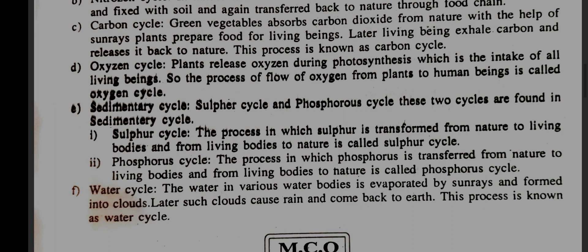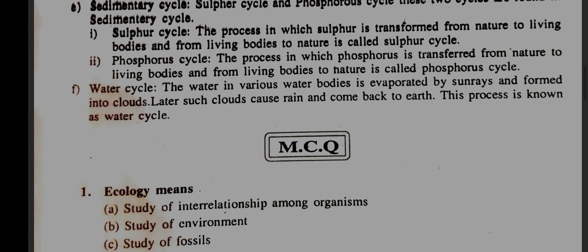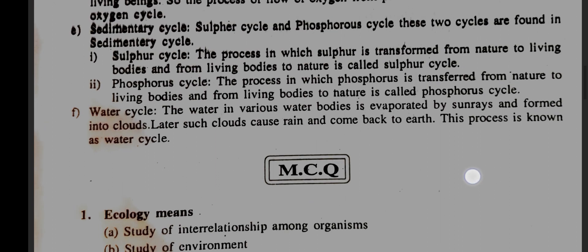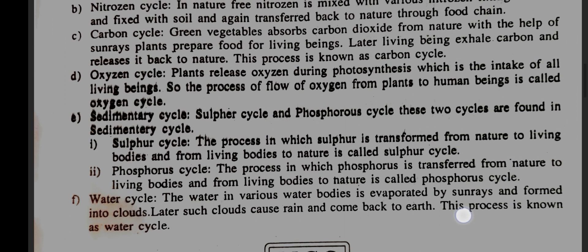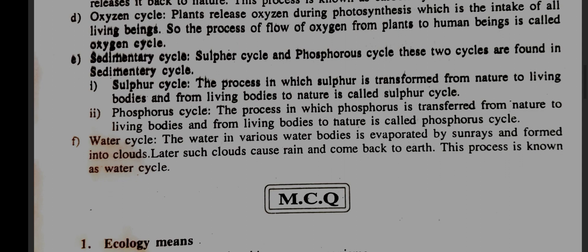Sulfur cycle: the process in which sulfur is transformed from nature to living bodies and from living bodies to nature is called the sulfur cycle. Phosphorus cycle: the process in which phosphorus is transferred from nature to living bodies and from living bodies to nature is called the phosphorus cycle. Water cycle: the water in various water bodies is evaporated by sun rays and formed into clouds; such clouds cause rain and come back to earth — this process is known as the water cycle.